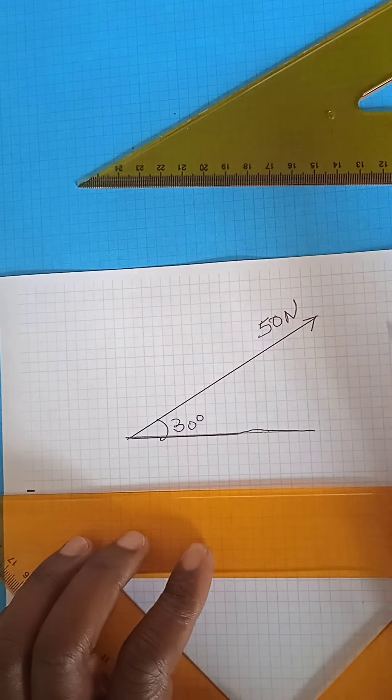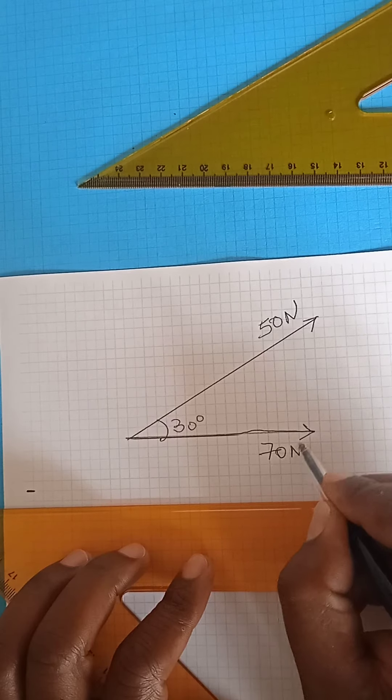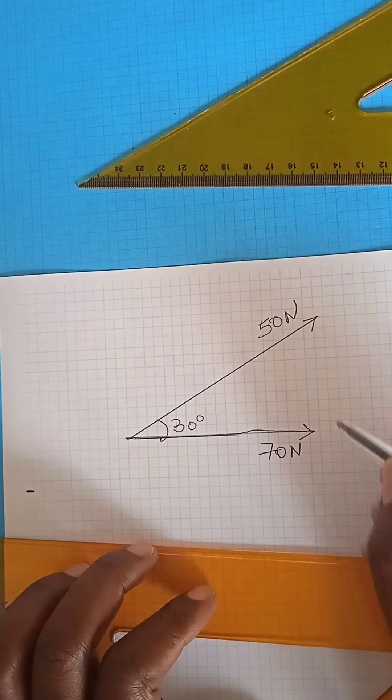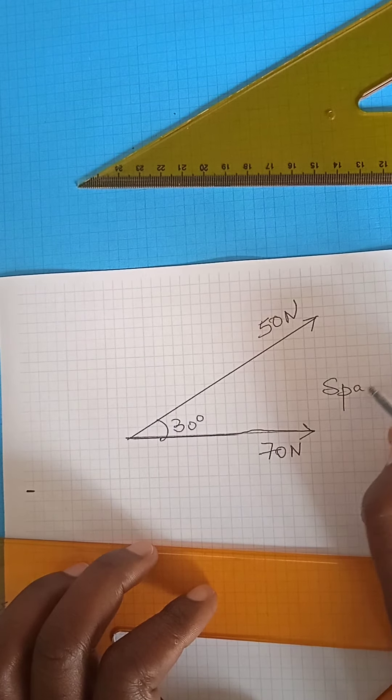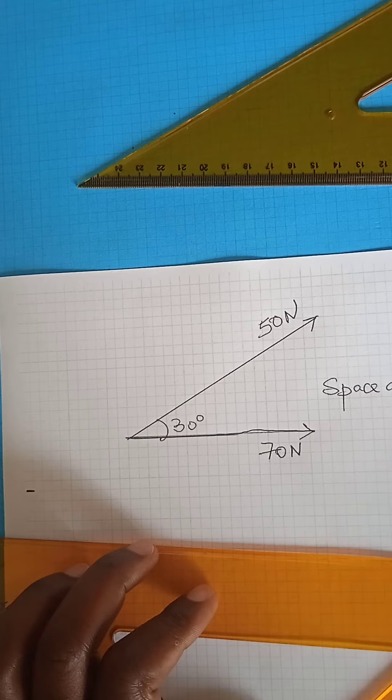This angle is 30 degrees. There is my 50 Newton. And there is my 70 Newton. I will label this diagram space diagram. A space diagram is simply a working diagram. We can also call it a form diagram.